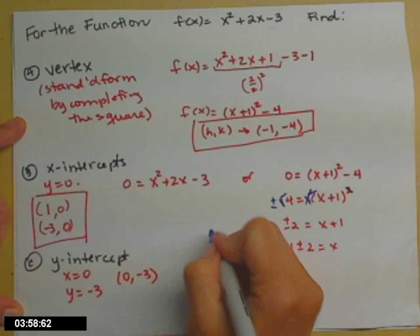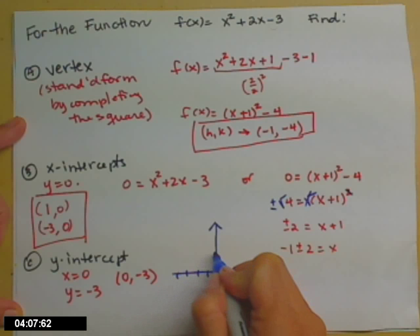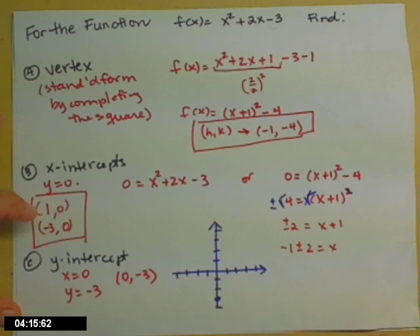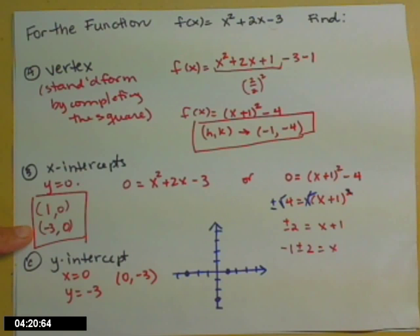So let's get a quick sketch putting all of those things together. So just mark a little bit on a graph here. So a y-intercept, 0, negative 3. It's a point on my graph. x-intercepts, negative 3, 0, and 1, 0. More points on my graph.